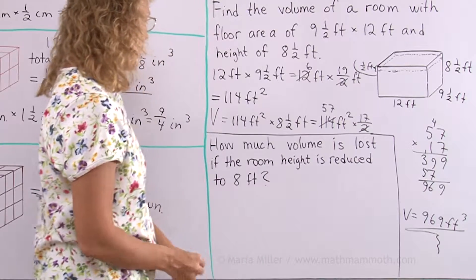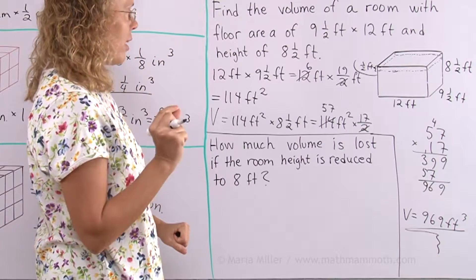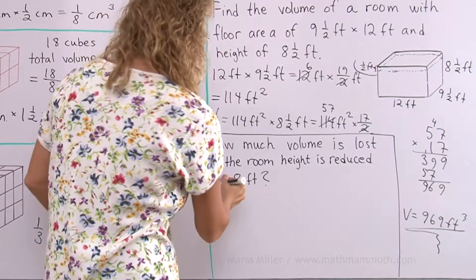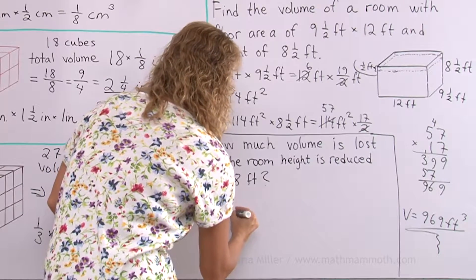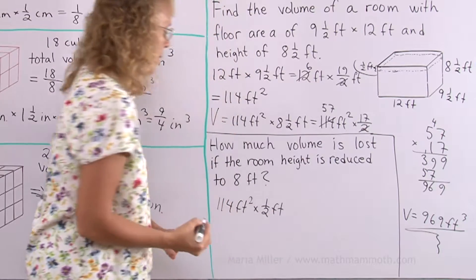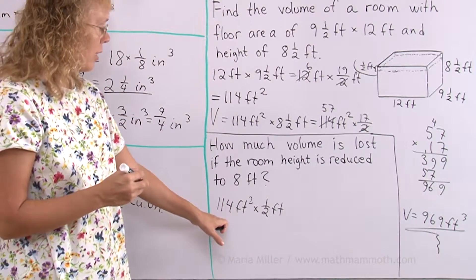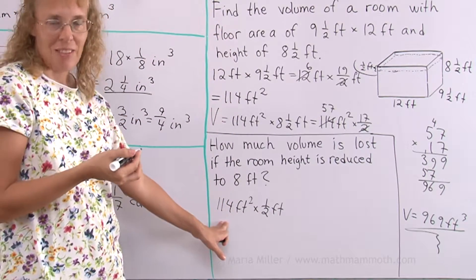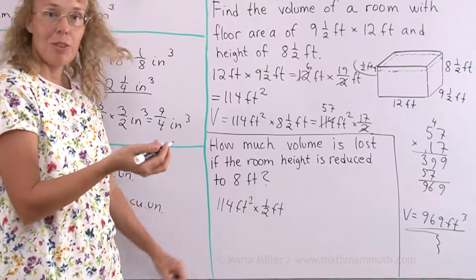So I can take the floor area, which was calculated here, times the height that it is reduced by to half the foot. So this is 114 times half. Or half of 114.